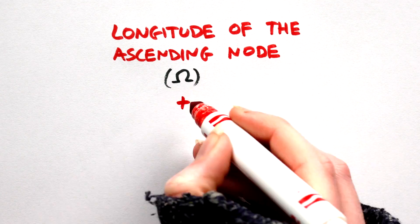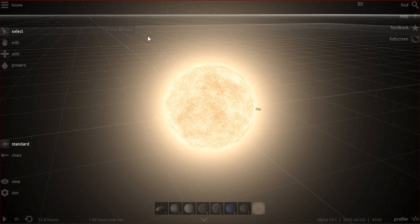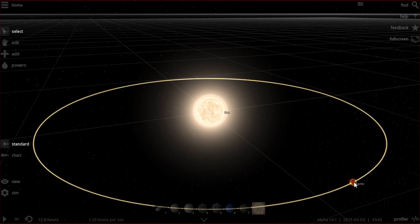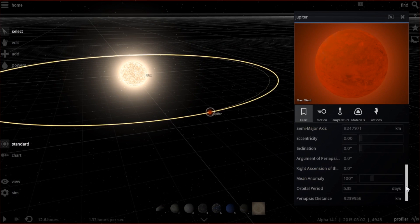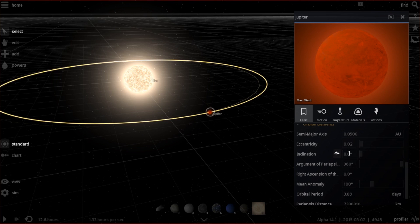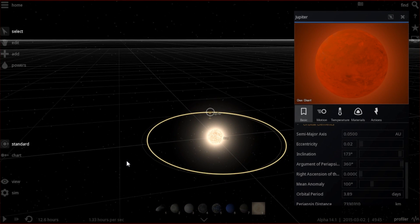Longitude of the ascending node and argument of periapsis. Into Universe Sandbox we go to define our orbit in 3D space. FYI, Universe Sandbox is a great orbital simulator and I strongly recommend buying it. Links in the dooblydoo. Anyways, let's place our star here and set its mass at 1.1 solar masses. Next, let's select a gas giant, place it, and start filling in the fields we've already calculated. So, semi-major axis is 0.05 AU, eccentricity is 0.02, and inclination 172.9 degrees.